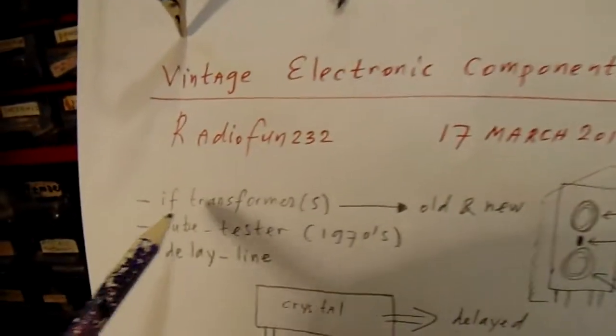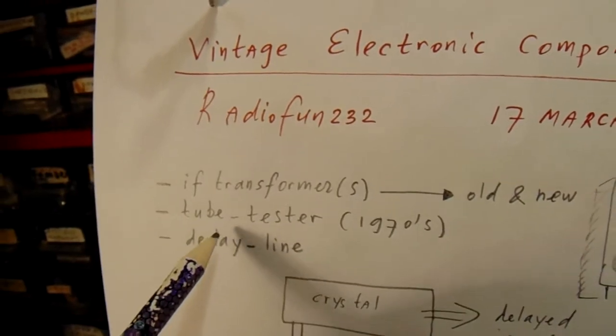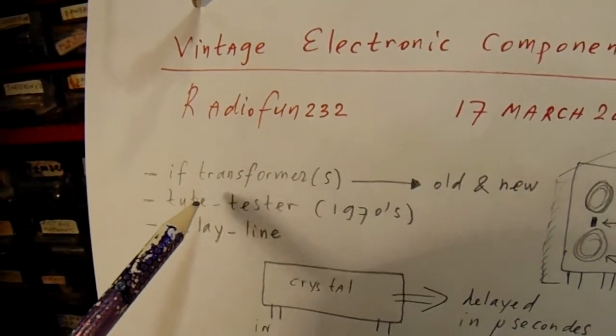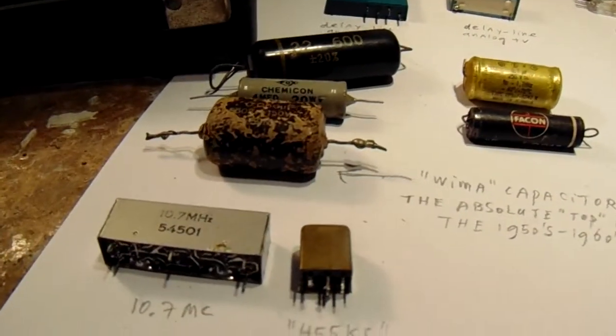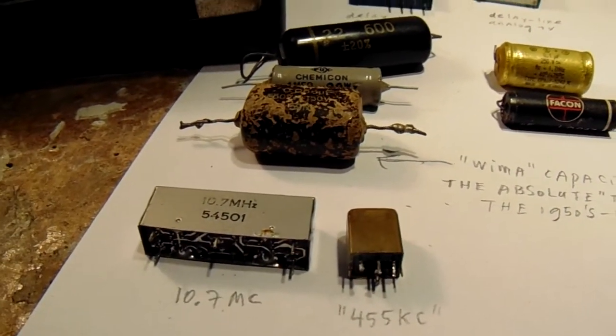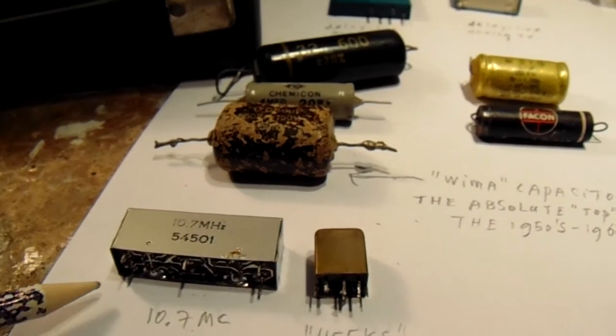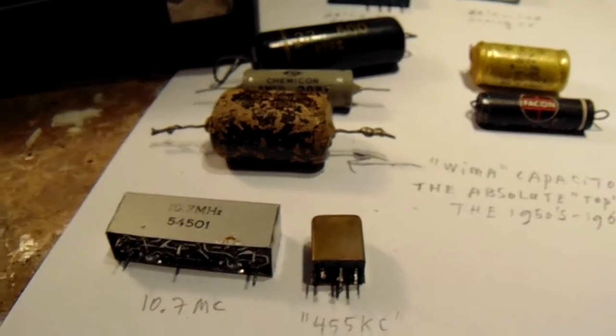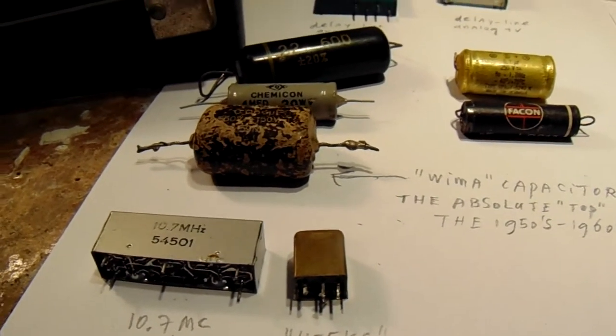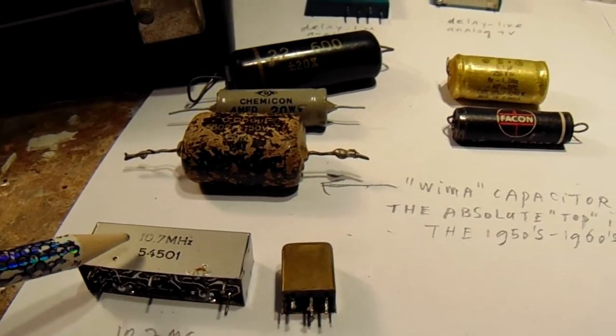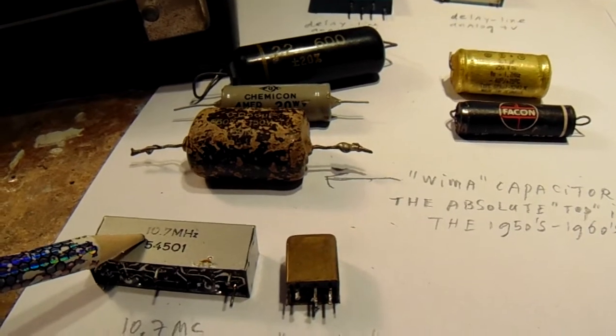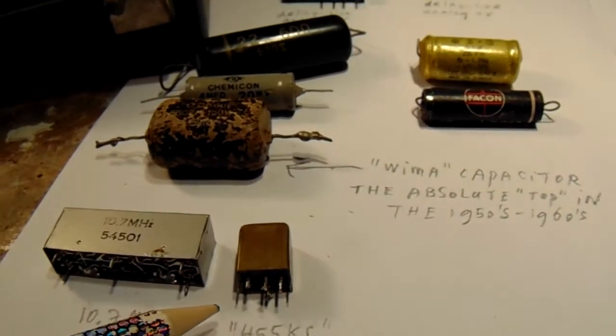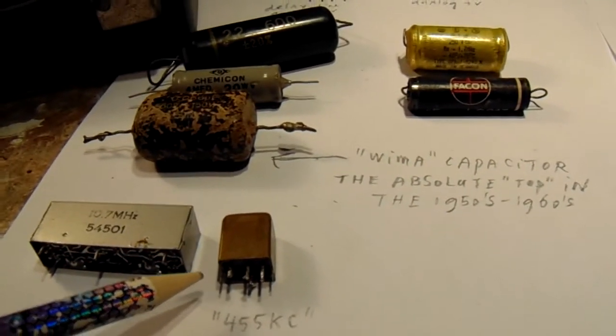So, we've had the tube tester, the IF transformer is here. In fact now it's kind of vintage. But anyway, now in 2017 we also have radios that work with an IF frequency on 10.7 MHz, or AM radios that work on 455 kHz.